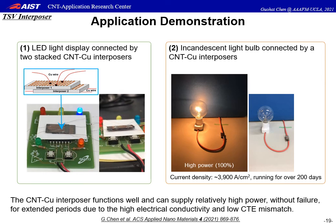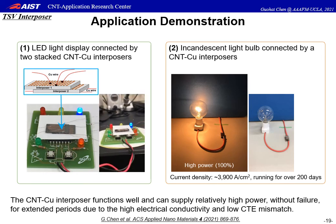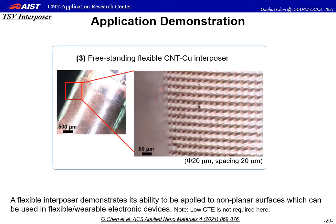Because of the high electrical conductivity and small CTE mismatch, power could be delivered without interruption or failure for over 200 days. This result demonstrated its high performance due to high electrical conductivity and low CTE mismatch. The other demonstration was a flexible interposer which could be used in flexible wearable electronic devices. Instead of using silicon as a substrate material, we used PDMS. We embedded the CNT–copper pillars into PDMS monomer. After curing, the embedded pillars were released from the growth substrate, creating a freestanding flexible interposer. These pillars were 20 microns in diameter and 20 microns spaced, demonstrating ability to be applied to non-planar surfaces.